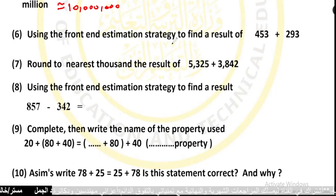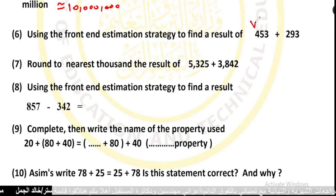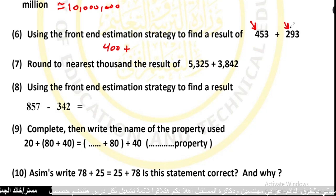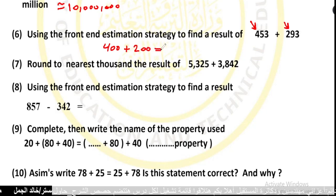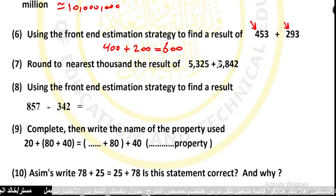Number 6: using the front-end estimation strategy to find the result of 453 plus 293. The value of 4 in the hundreds place is 400, and the value of 2 in the hundreds place is 200. So 400 plus 200 equals 600.